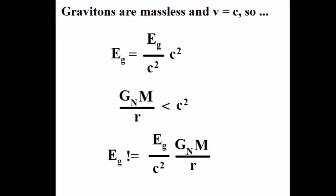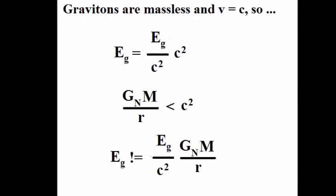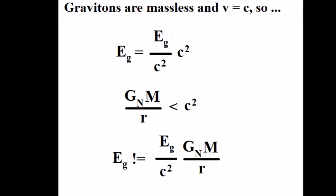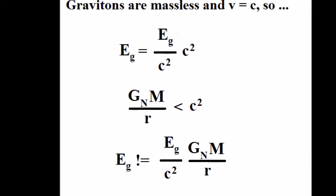Further, gravitons are massless and move at light speed. The bottom equation reveals a paradox.